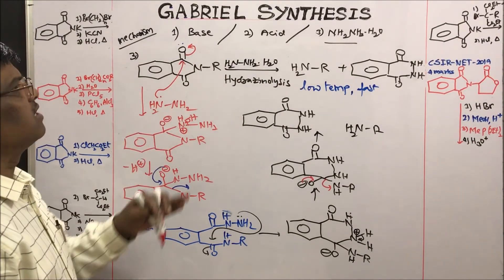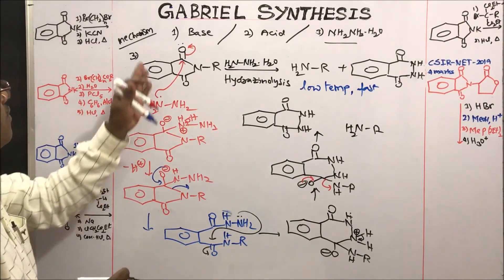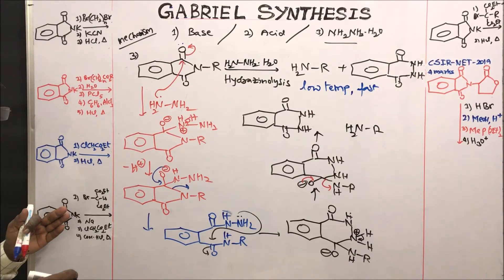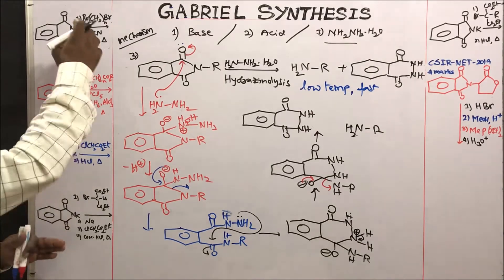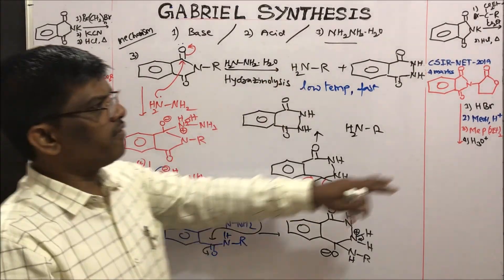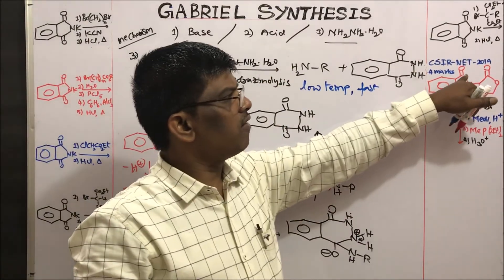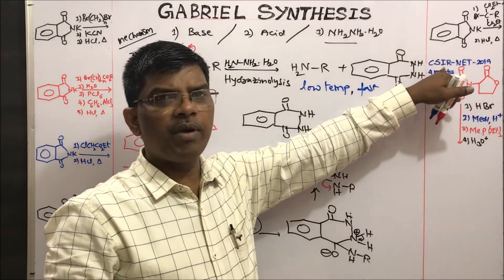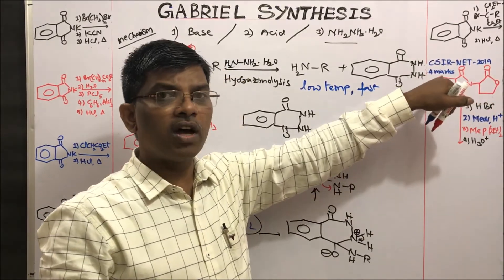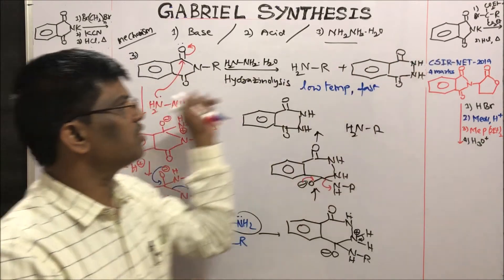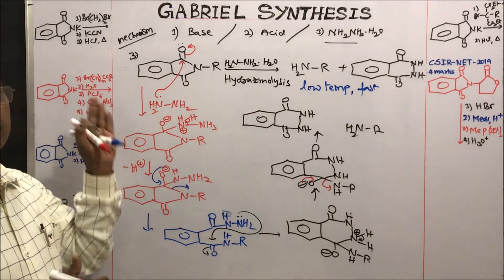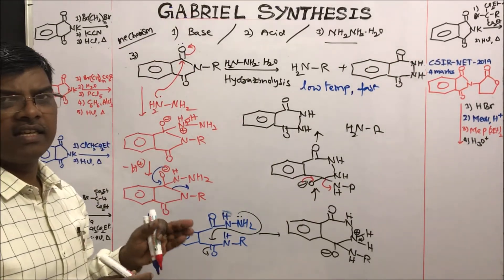So you can use base, acid, or hydrazine hydrate — any one of these three. Now let us see some applications of Gabriel synthesis in organic synthesis. I have taken some examples; one of them recently appeared in CSIR NET for 4 marks. Let us solve these questions and see the answers based on Gabriel synthesis.